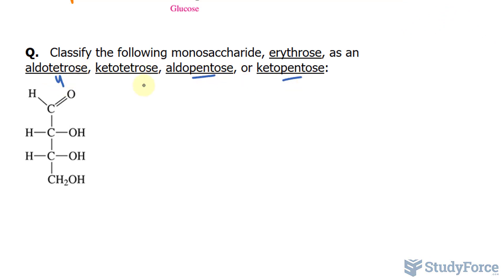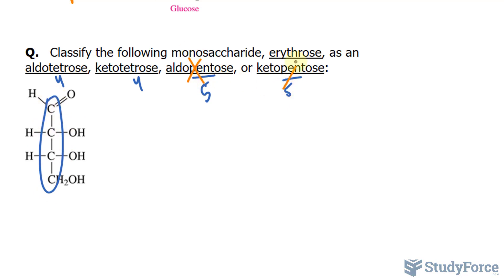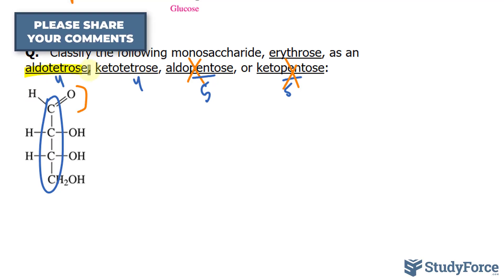So four carbons and five carbons. Our molecule has four carbons, so we can eliminate the pentose options. In addition, at the very top it looks like we have an aldehyde, because we have carbon double bonded to oxygen, a hydrogen bonded to carbon, and this carbon is bonded to another carbon. So out of these two, this one is the answer — we have an aldotetrose.